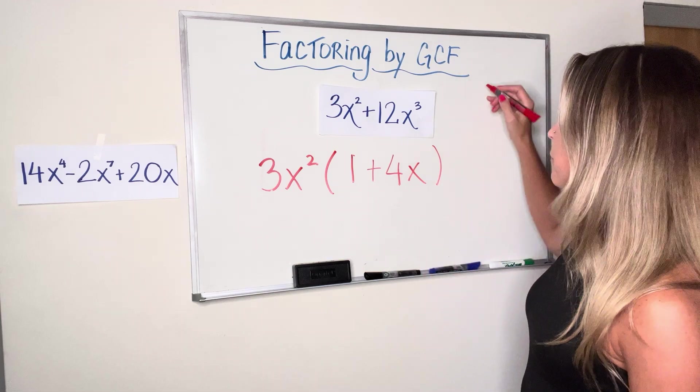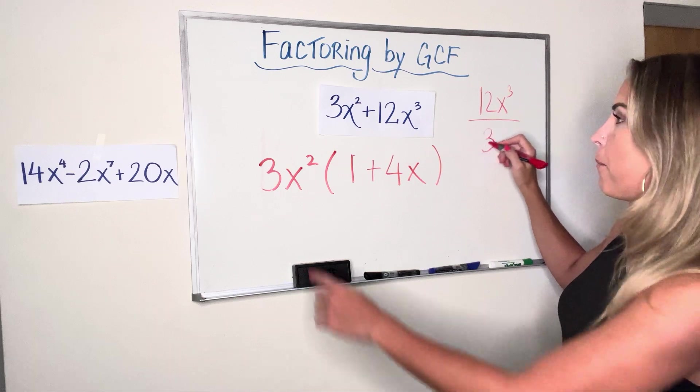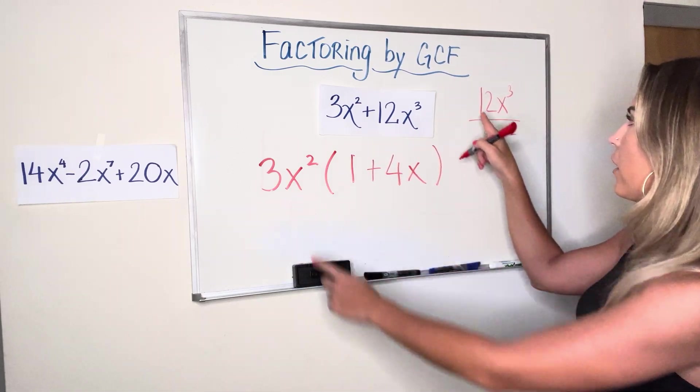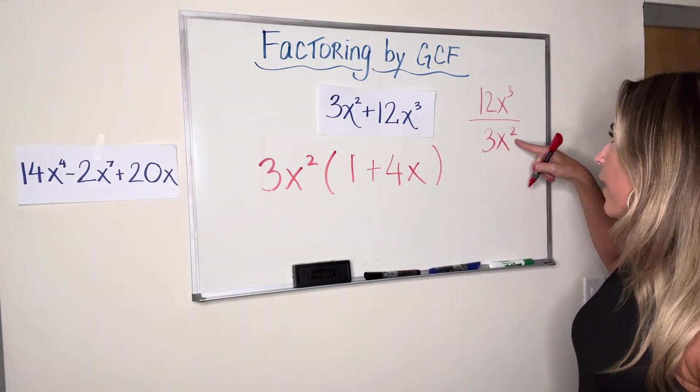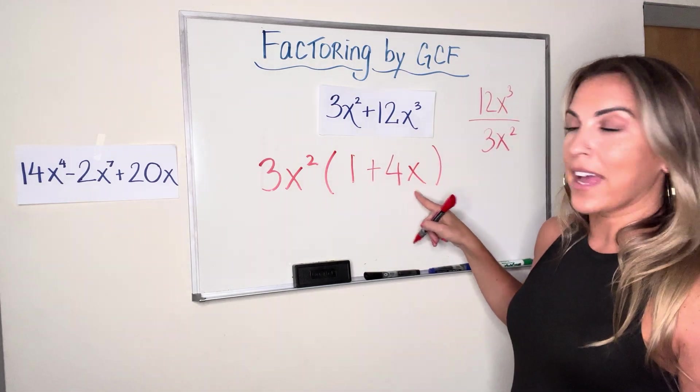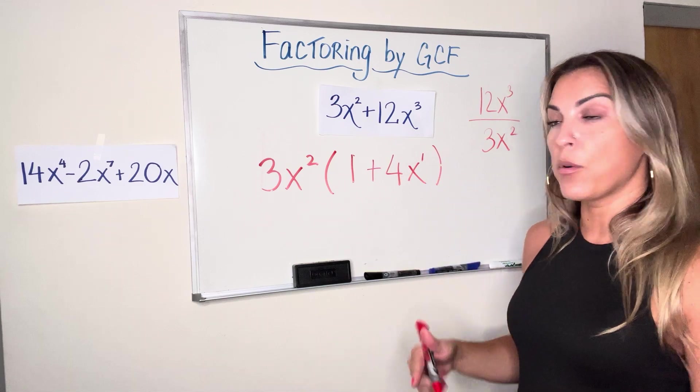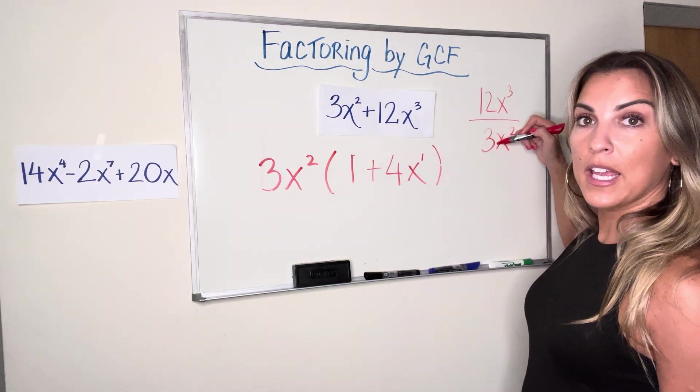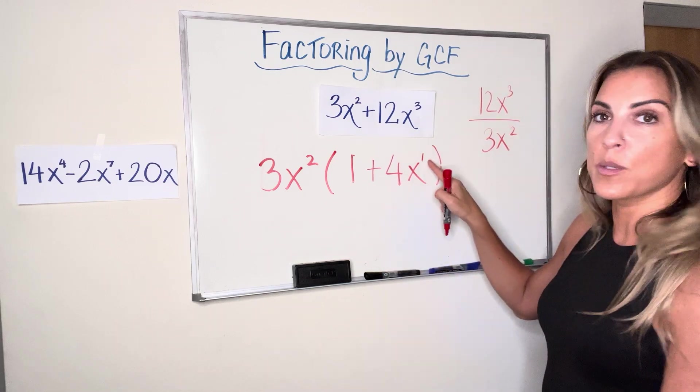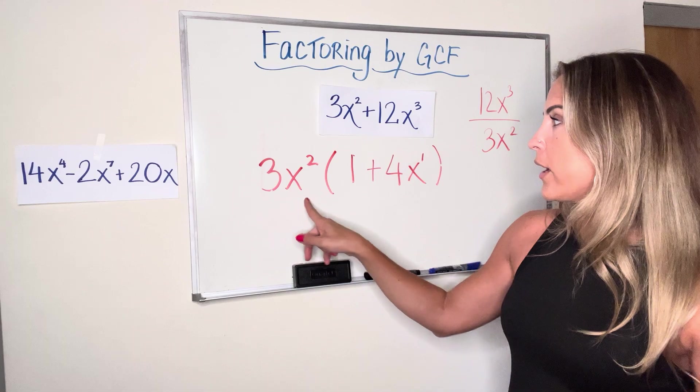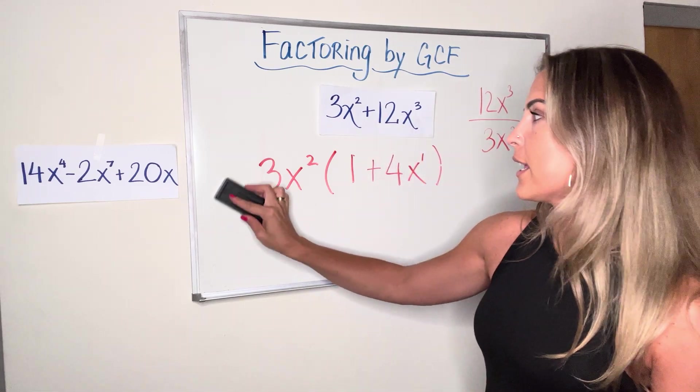And again, if you're doing it the division way, 12x³ divided by my GCF, 3x², 12 divided by 3 is 4 and x³ divided by x² is just x or x to the first power. Again, remembering division rules for exponents. If the bases are the same, you keep the base and you subtract the exponents in division. So that's where that 1 comes from. So 3x² times 1 plus 4x is the factored version of our second example.